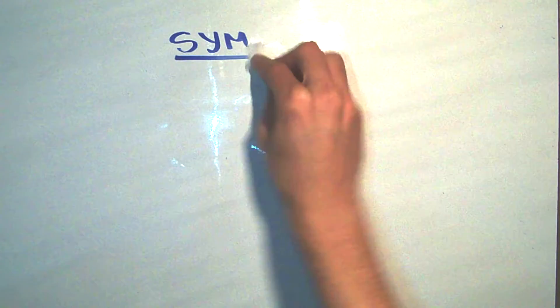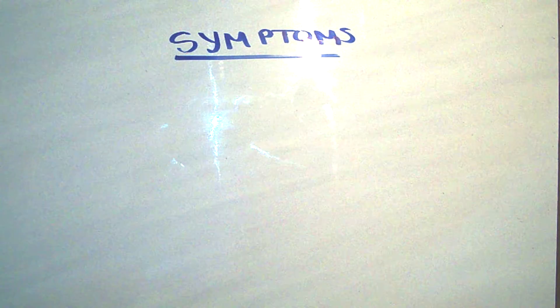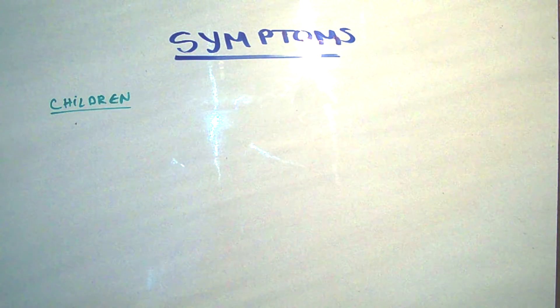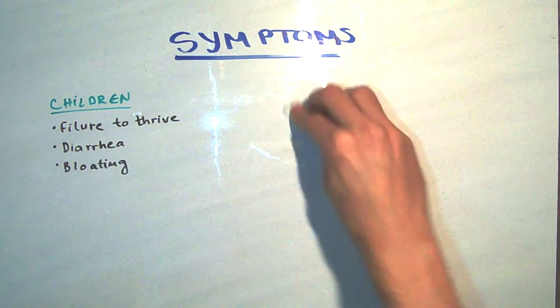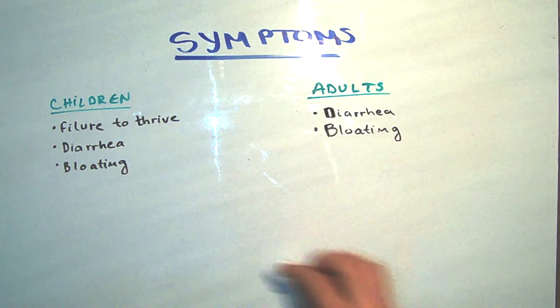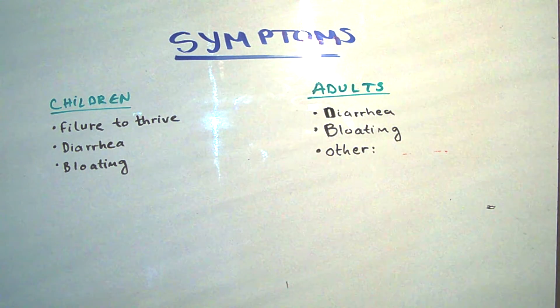The symptoms of celiac disease can develop at any age, once gluten-containing foods are added to the diet. In the past, celiac disease was thought to be a childhood disease, but it is now recognized that it occurs more frequently in adults. In children, the symptoms are failure to thrive, diarrhea, and bloating. In adults, the same symptoms like diarrhea and bloating, but also some other symptoms.